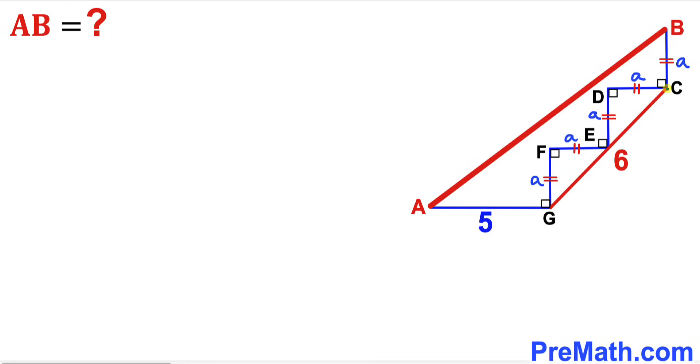Therefore segment EC is going to be half of 6, so this segment is going to be 3 units.